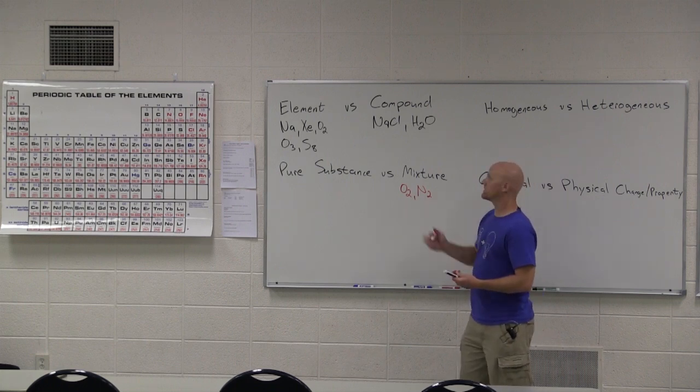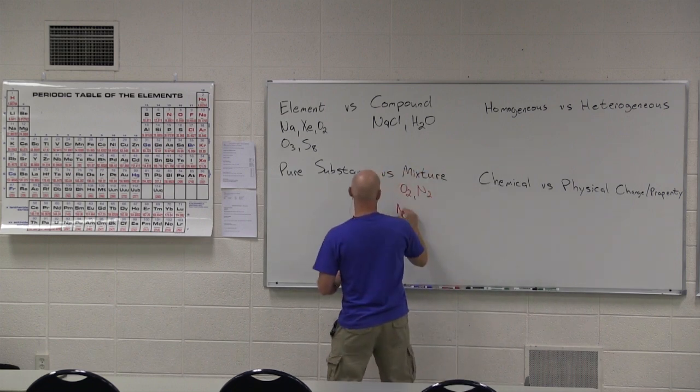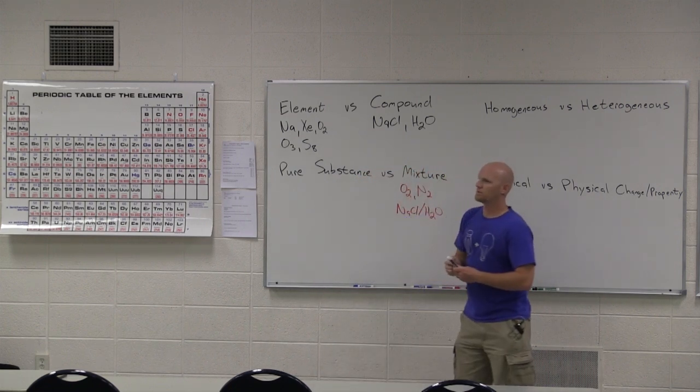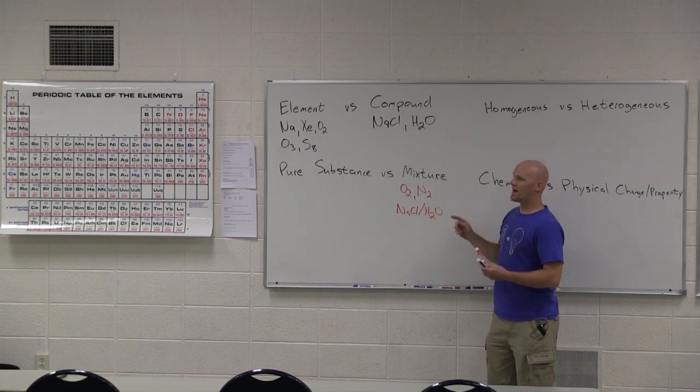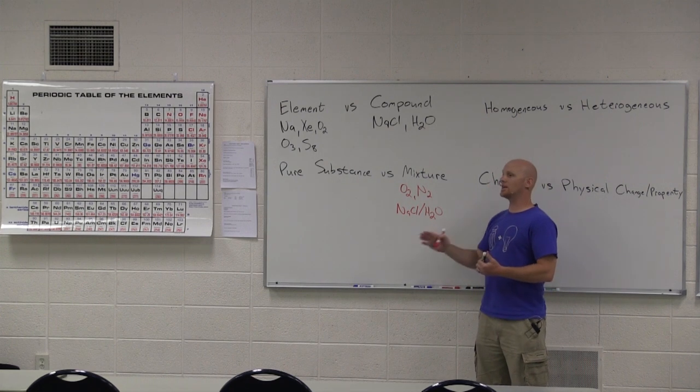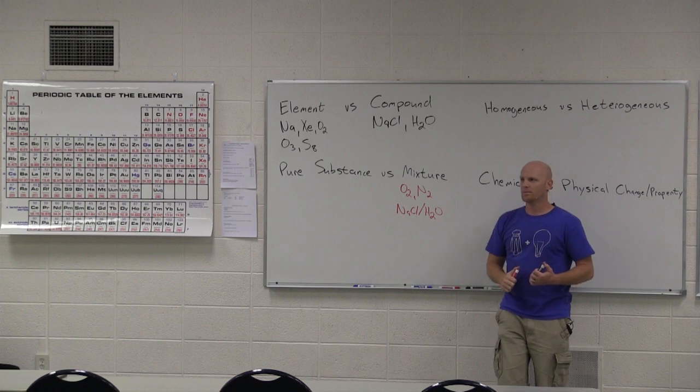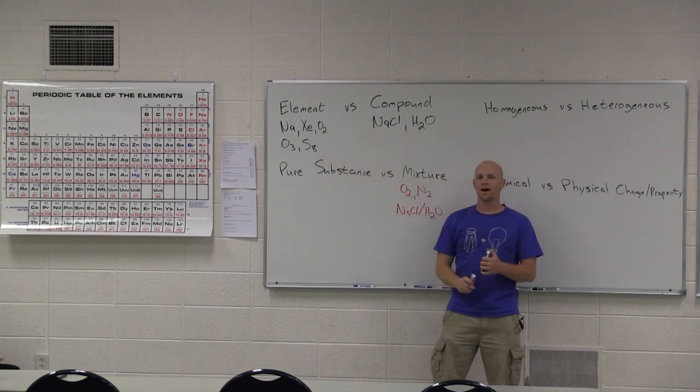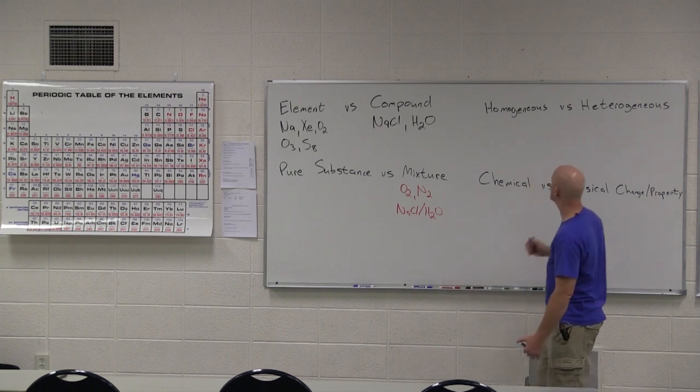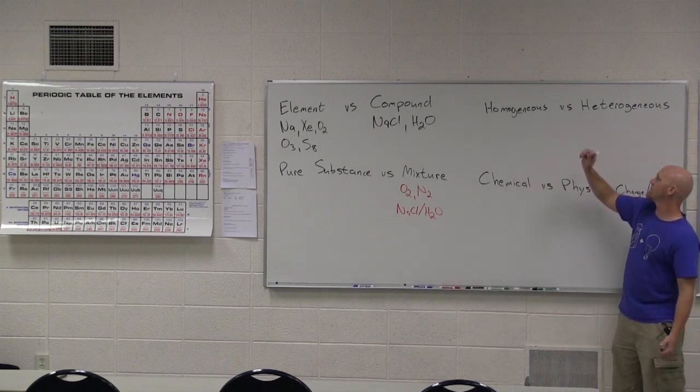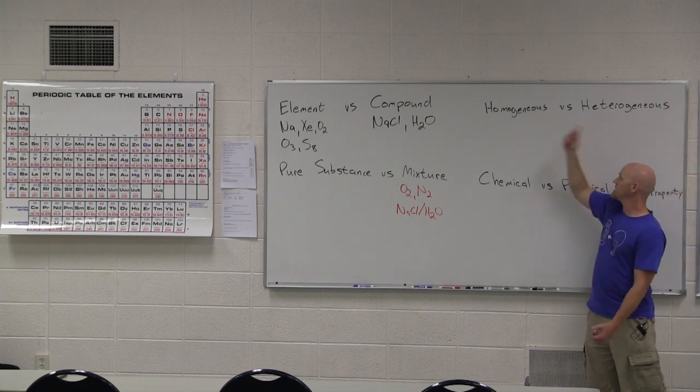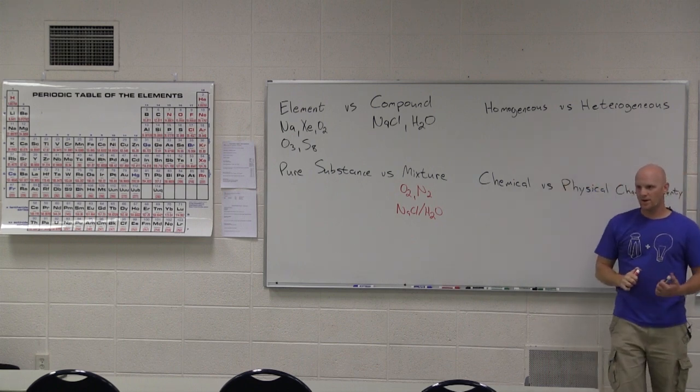We could also have like salt water, which is a mixture of salt and water. If you combine two compounds together, that's a mixture as well. Or you could just have an element and a compound mixed together. But if you have multiple elements, multiple compounds, or more than one of each, that's a mixture. Now, we have two different types of mixtures. We have homogeneous and heterogeneous. Sometimes they leave that second E out, or I guess really like the fourth E in this case.